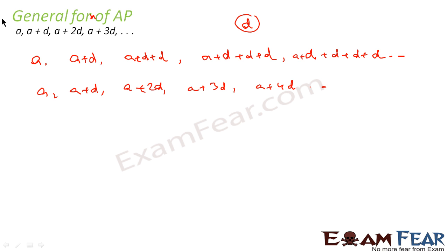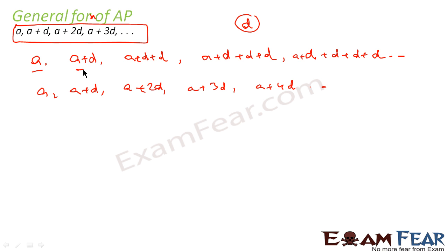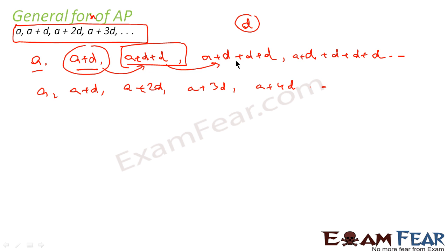Please remember this. Whenever you are asked to write an AP, in most questions we will assume the AP to be A, A plus D, A plus 2D, A plus 3D. By definition, on every term you add a common difference. So on A we add D to get A plus D; on that term we add D again to get A plus 2D; again add D to get A plus 3D; and again add D to get A plus 4D.